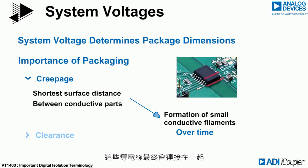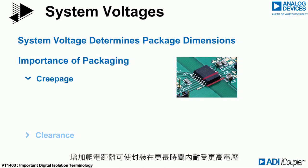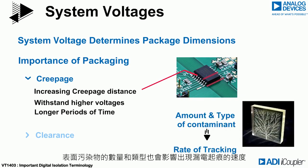These filaments eventually join together and will produce a leakage path in a process known as tracking. Increasing the creepage distance allows the package to withstand higher voltages for longer periods of time. The amount and type of contamination present on the surface will also impact how rapidly tracking occurs.